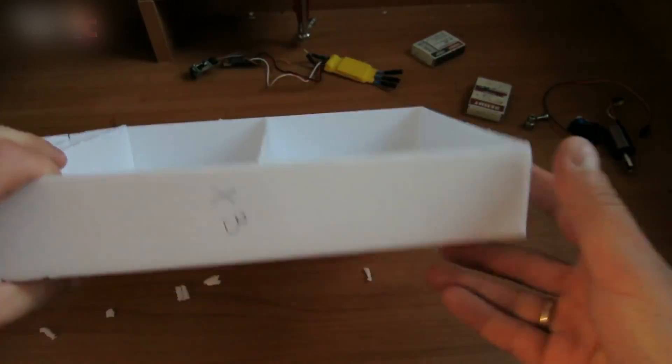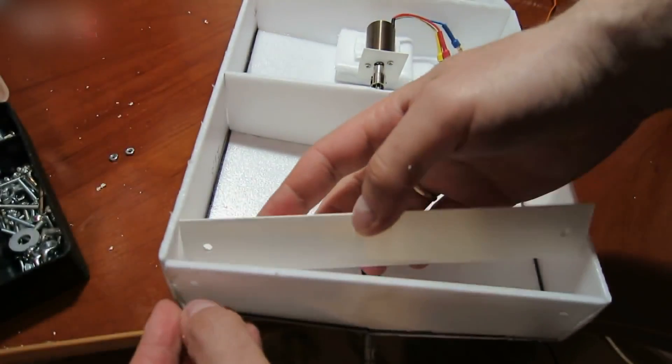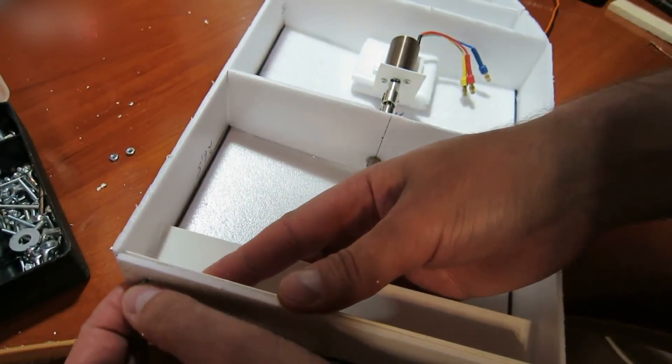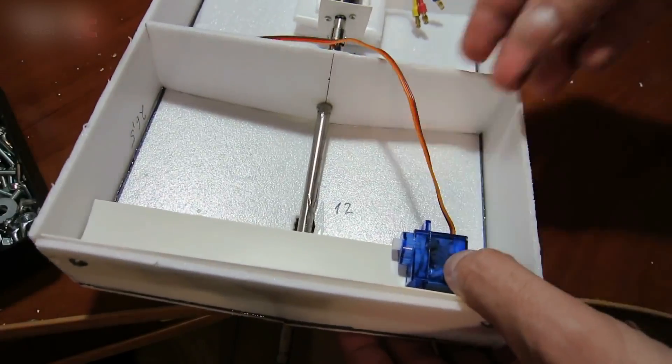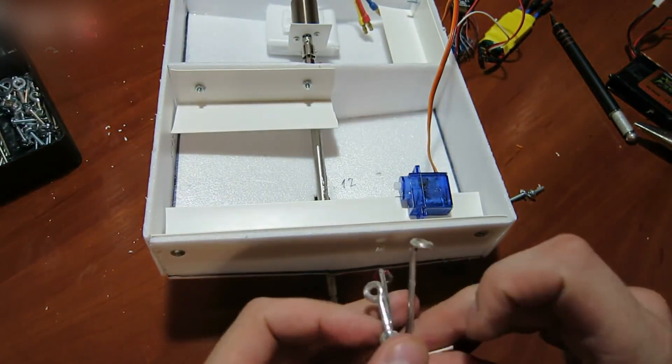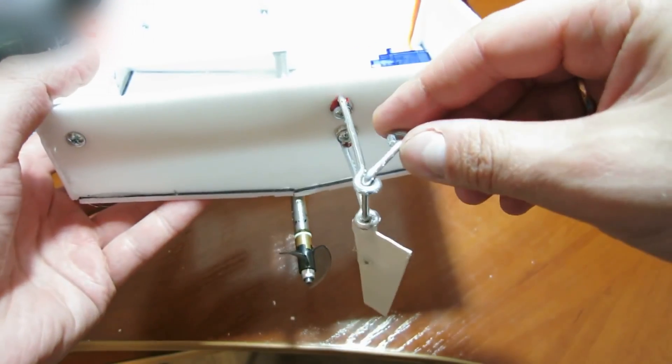You can tell the propeller will be fully submerged in the water. Here's how I secured the motor. Now, let's secure a plastic corner piece in the boat for the electronic components. The turning mechanism of the boat looks like this. It is made from three pieces of bent wires and a piece of plastic. This is how it will operate.